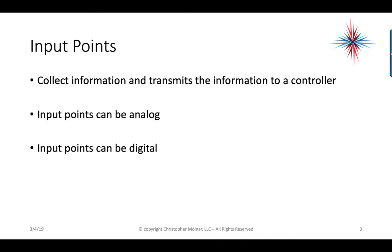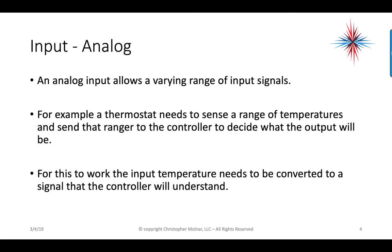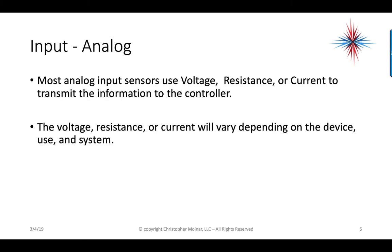The input points can be analog or digital — there's a difference between the two. Analog inputs allow a varying range of input signals. For example, a thermostat needs to sense a range of temperatures and send that range to the controller to decide what the output will be. The input temperature needs to be converted to a signal the controller will understand. Most analog input sensors use voltage, resistance, or current to transmit the information.